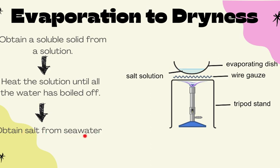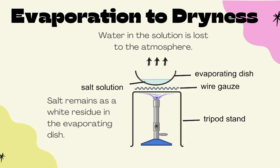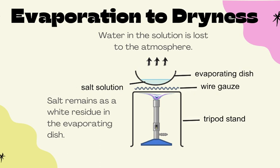For example, if you are looking at seawater, you will have salt remaining after the evaporation to dryness. As the water in the solution is lost to the surroundings, the salt will remain as a white residue found in the evaporating dish.